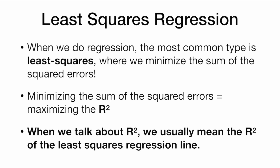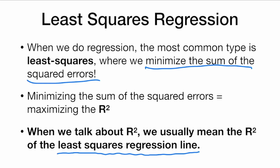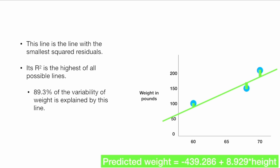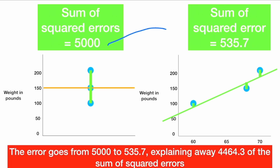When we do regression, the most common type is least squares regression, where we minimize the sum of the squared errors. Minimizing the sum of squared errors means we're going to maximize the R-squared, because we explain away more of the sum of squared errors. So when we talk about R-squared, we usually mean the R-squared of the least squares regression line — that's where the more complicated formula for the green line came from. This line has the smallest squared residuals, and its R-squared is the highest of all possible lines. We cannot do better than 89.3% when we draw a line through this data.